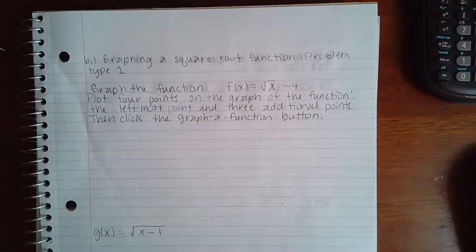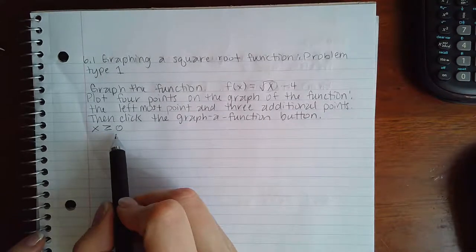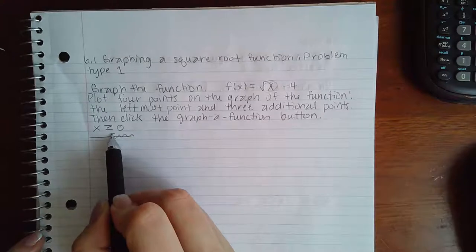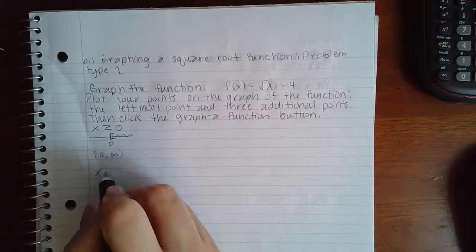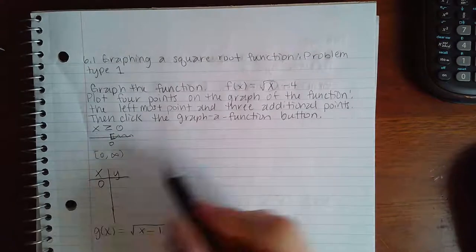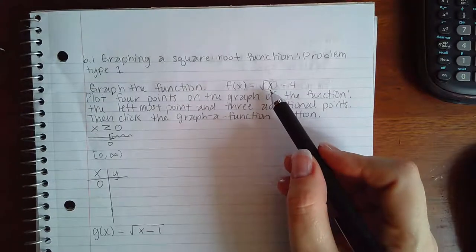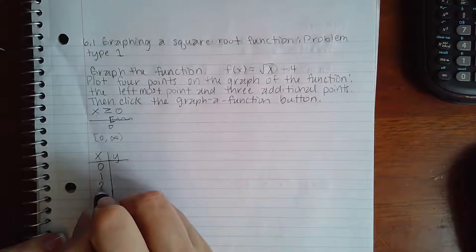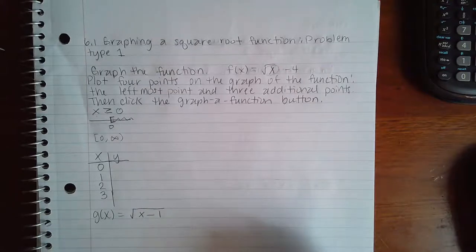Take what is inside the radical and set it greater than or equal to zero. There's nothing to solve here, so in interval notation the domain is [0, ∞) — everything from zero and bigger, with a bracket because of the equals. That means in my table I start with zero. I want to use values where I can take perfect squares to avoid decimals, but I could also just use one, two, and three if I'm not concerned about getting non-perfect roots.